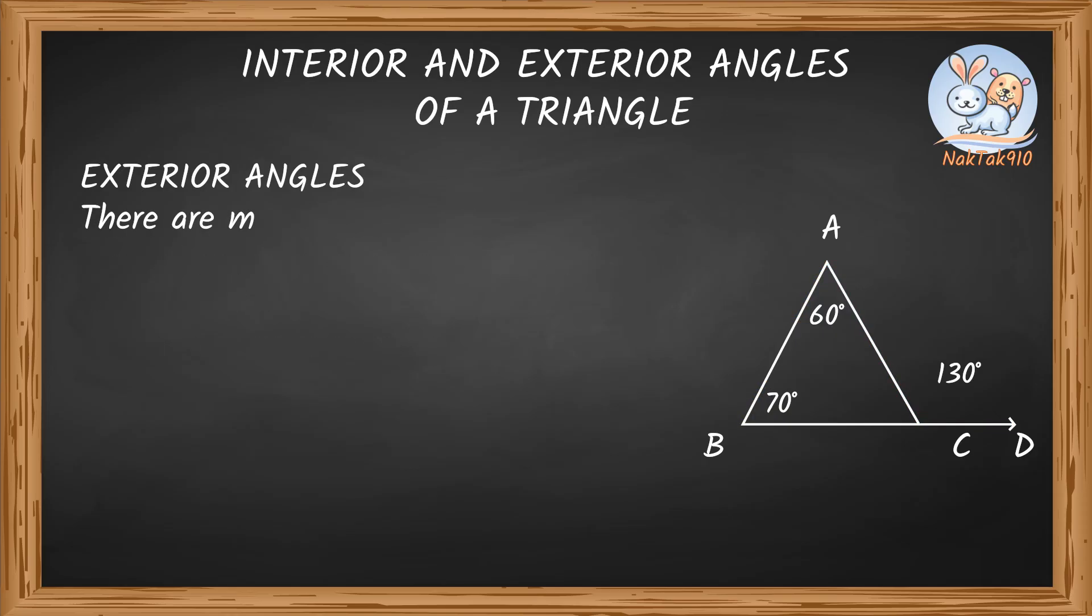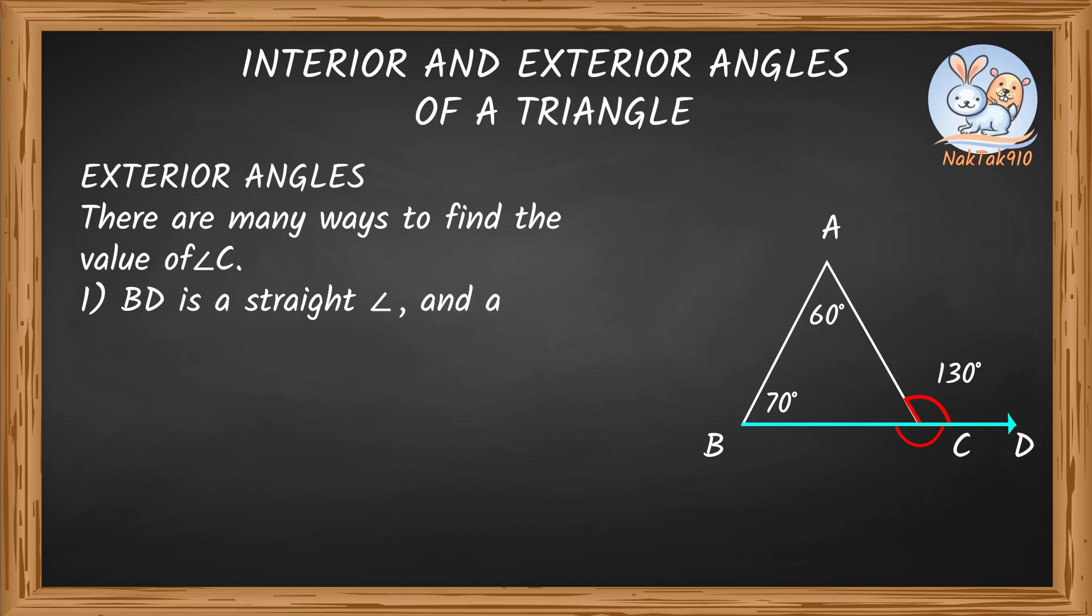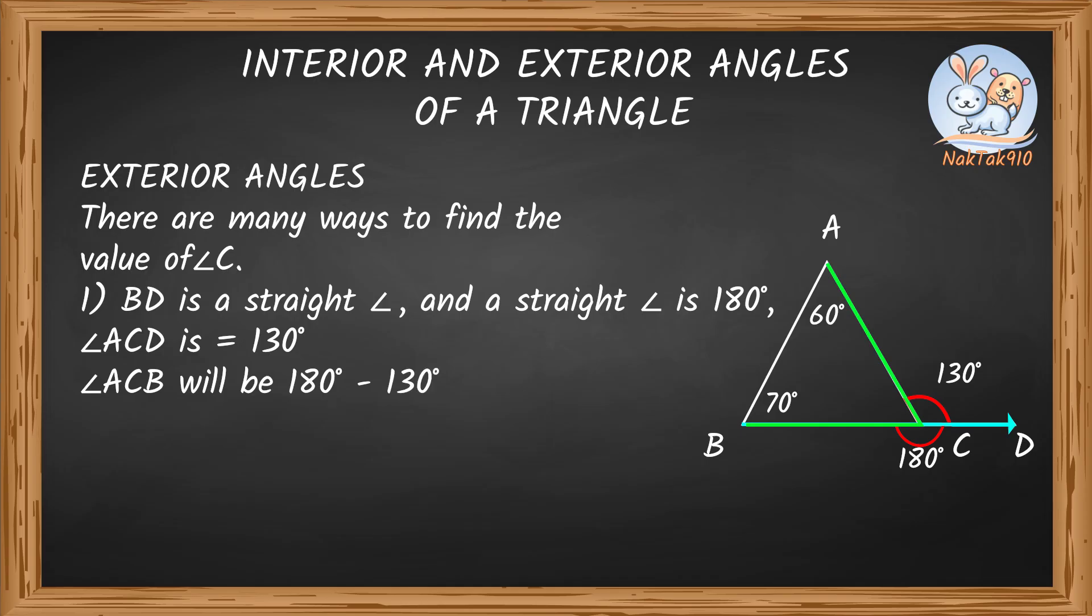There are many ways to find the value of angle C. Method 1: BD is a straight angle and a straight angle is 180 degrees. Angle ACD is 130 degrees. Angle ACB will be 180 degrees minus 130 degrees equals 50 degrees.